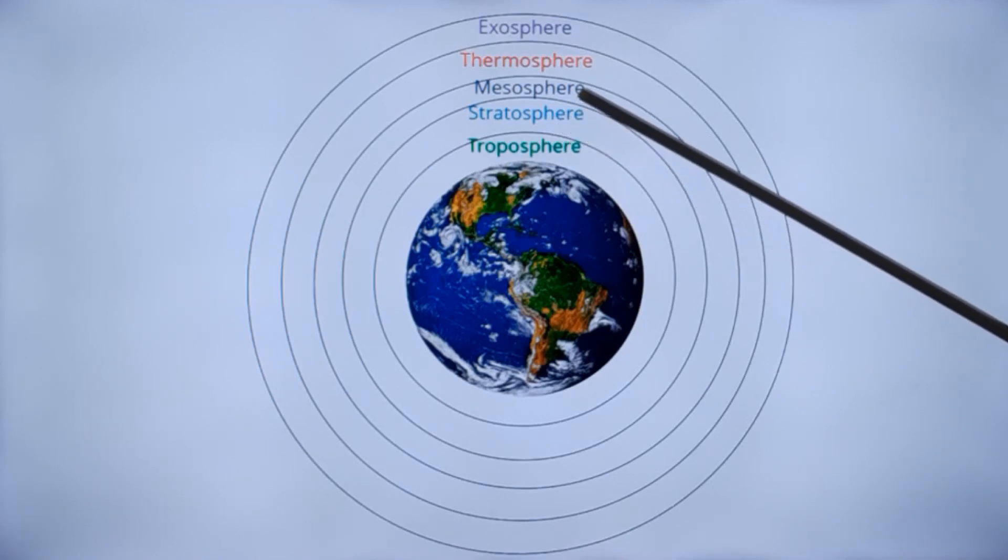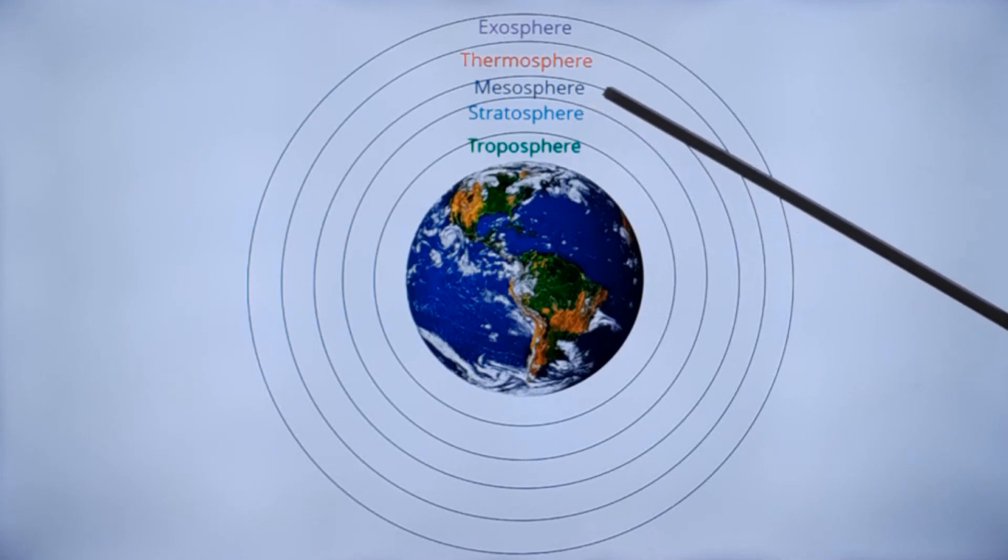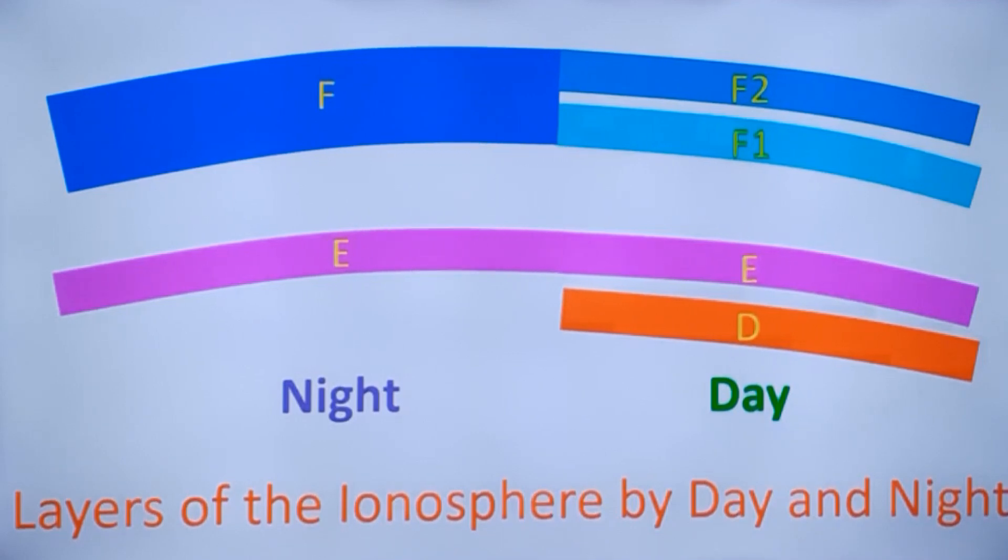These are the layers within the atmosphere by daytime and nighttime. Lowermost is the D layer. D layer is the one which absorbs medium waves, so that medium waves will not get reflected by the ionosphere and depends only on local propagation, that is ground wave propagation. But at night what happens is that the D layer disappears due to decreased ionization.